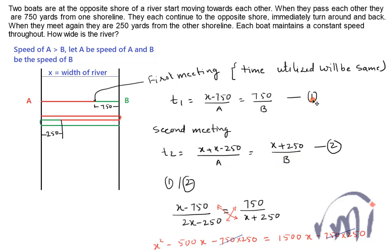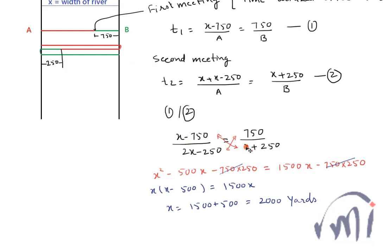Now if I divide equation 1 by equation 2, I will get x minus 750 divided by 2x minus 250 equals 750 divided by x plus 250. Now I will cross multiply. So x minus 750 times x plus 250 equals x squared minus 500x minus 750 times 250, which equals 750 times 250.